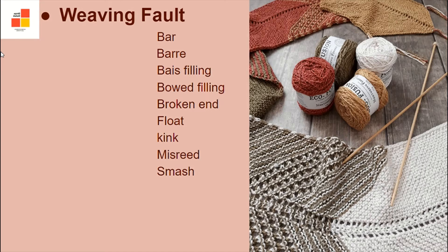Next, bias filling: when filling yarns are not bent at right angle to warp yarns. Bowed filling refers to filling yarns having curvature. Broken end is when a warp yarn is missing for a portion of its length. Float is where warp and weft threads do not interlace as desired.